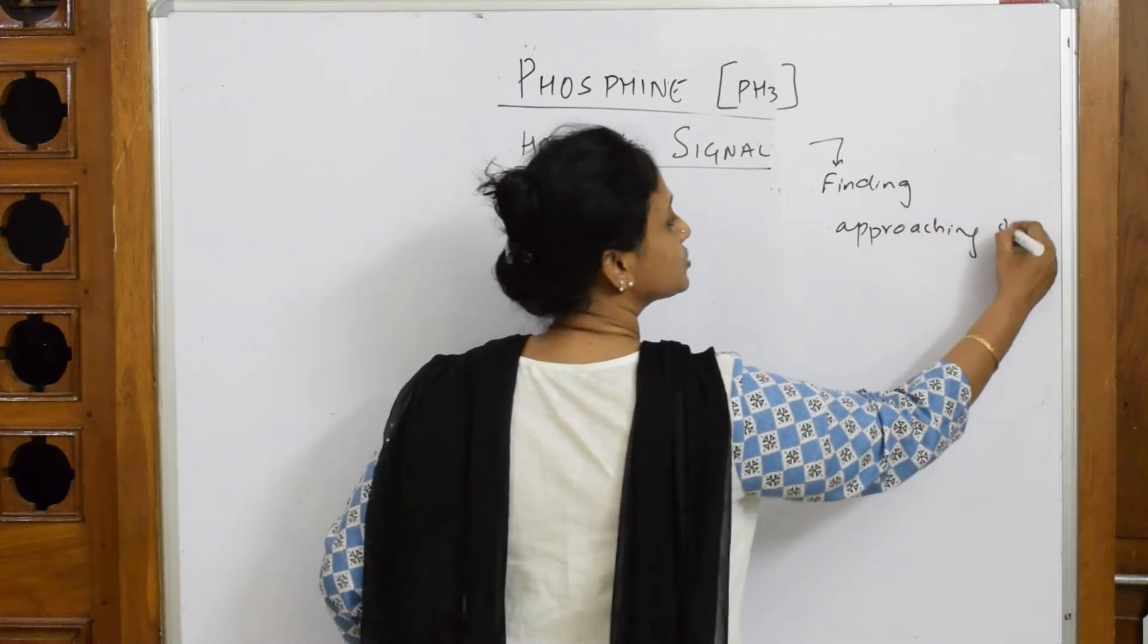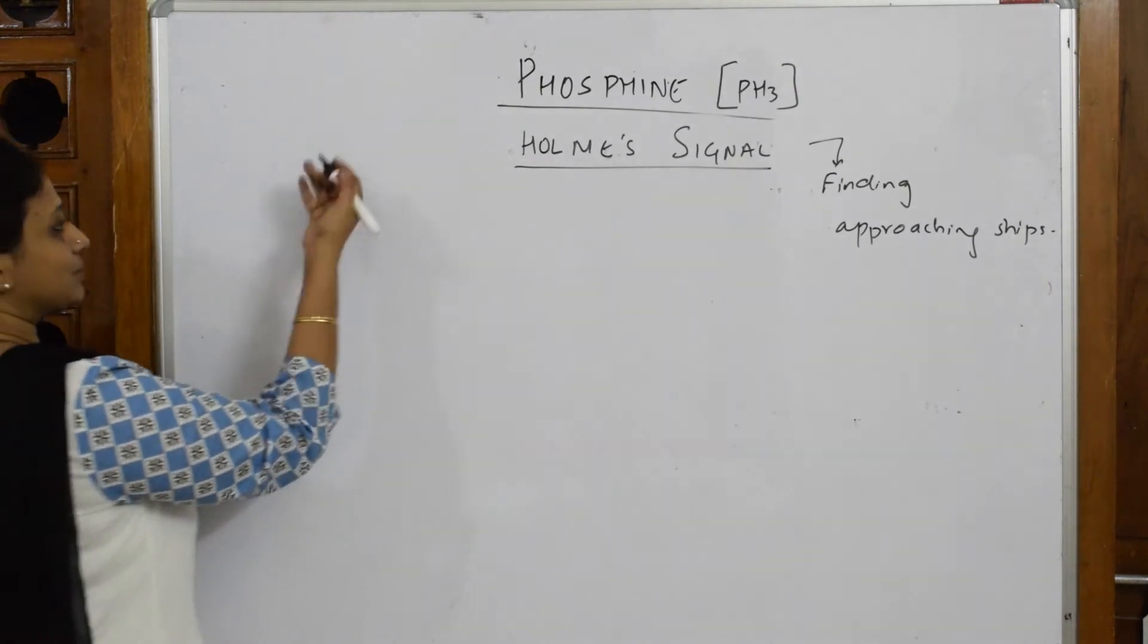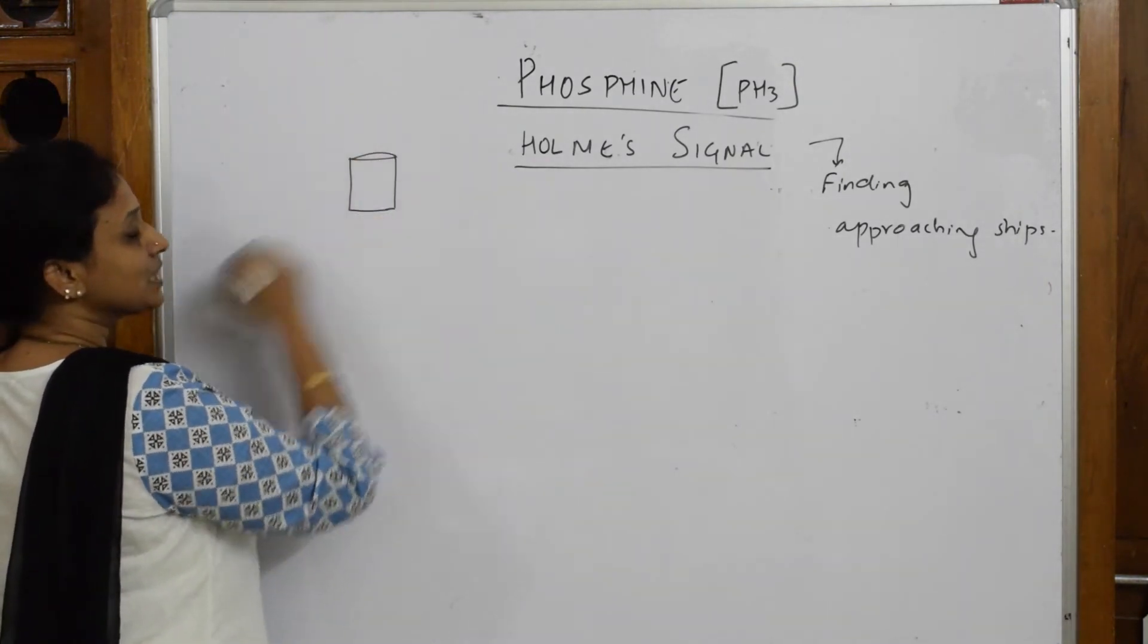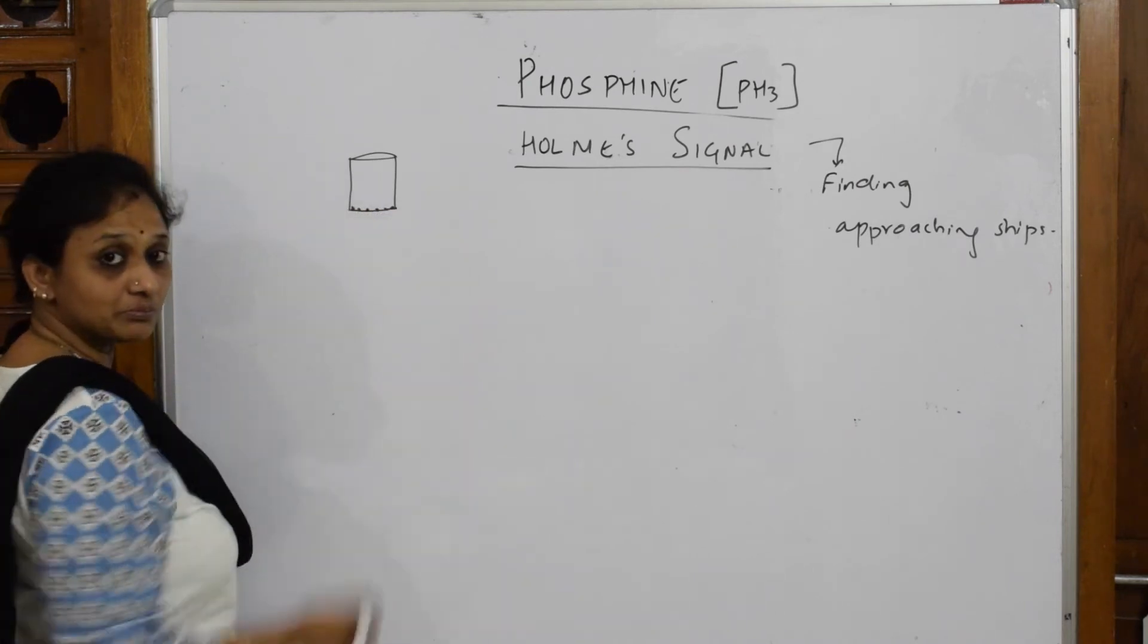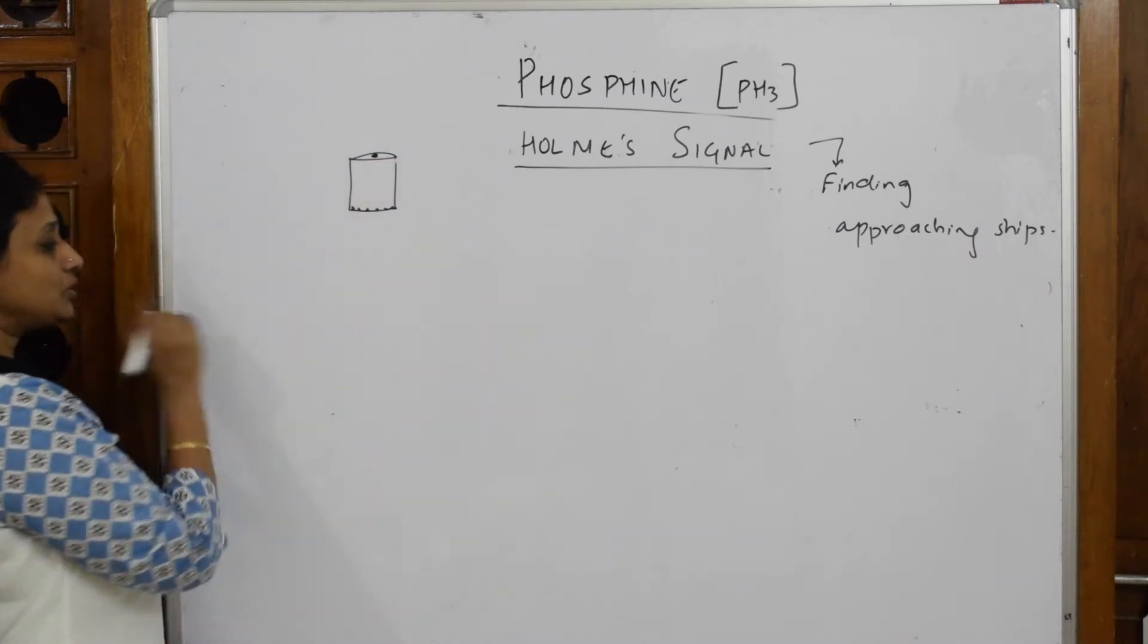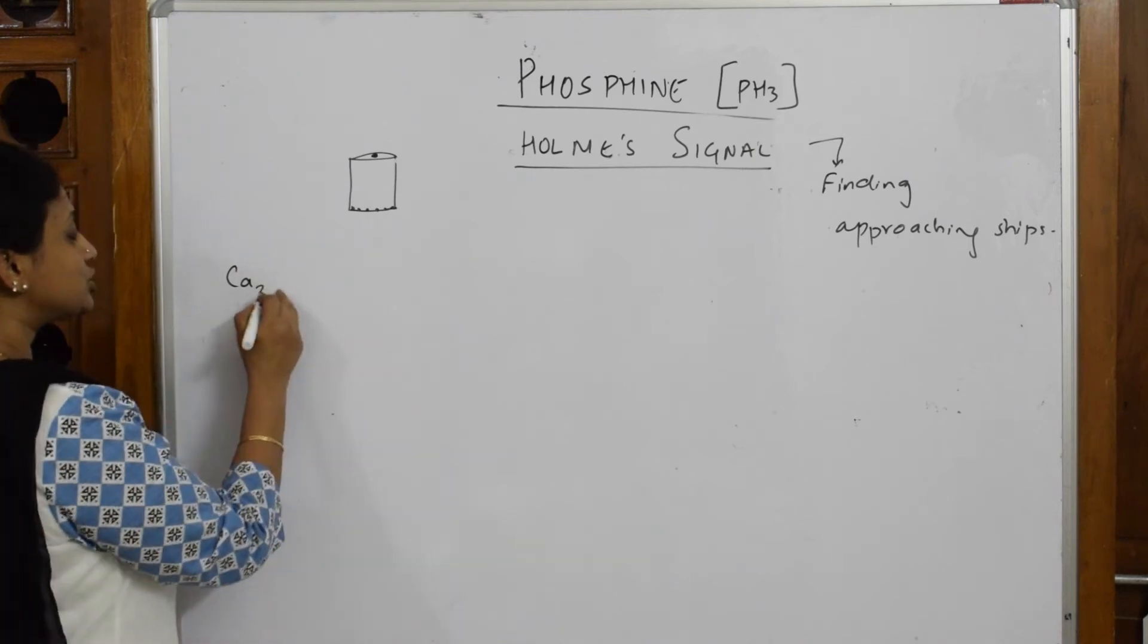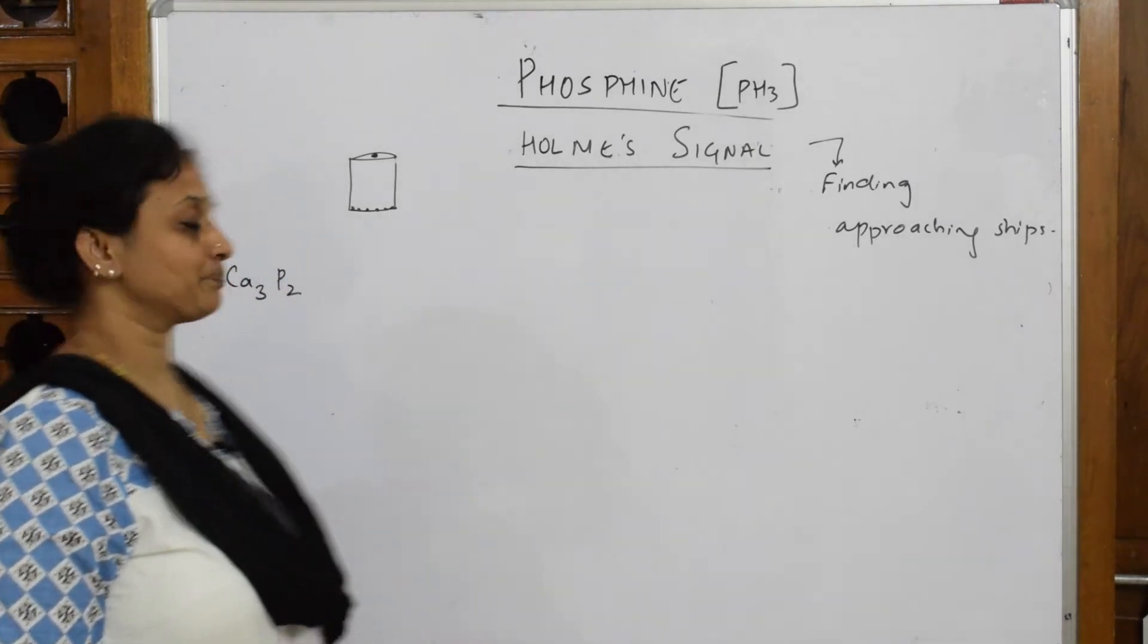So how does this happen? What do they do? They're going to take small cans like this. These cans are perforated at the below - they have holes in below and one more hole above. What do they do? They're going to introduce calcium phosphide in this.